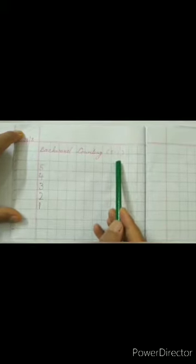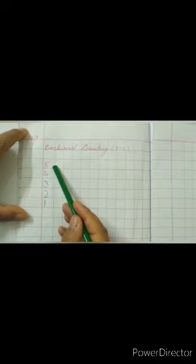Children, let's do counting from 5 to 1. That is backward counting. Okay? So, you will have to repeat after ma'am. Okay?